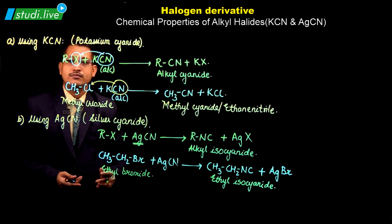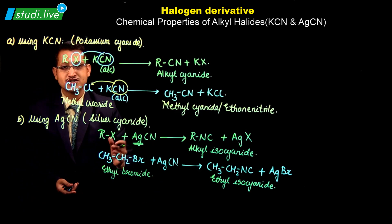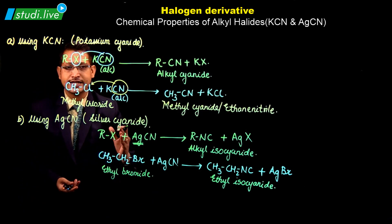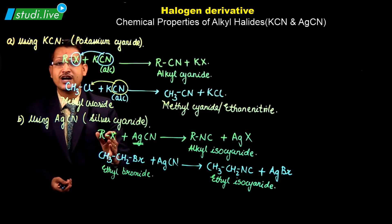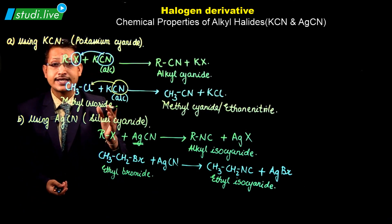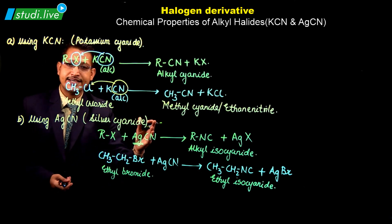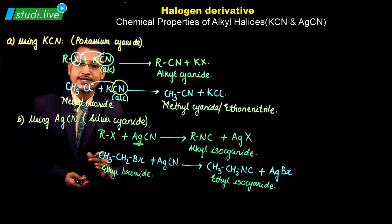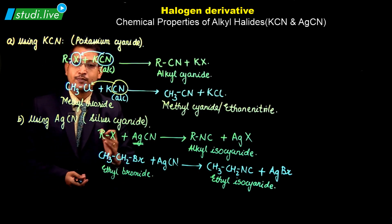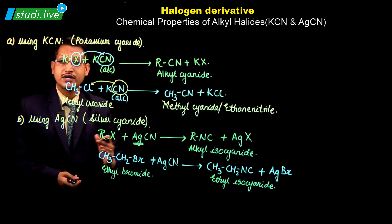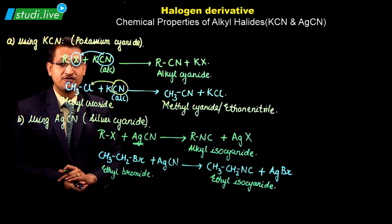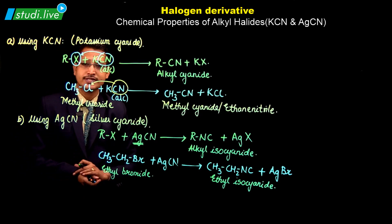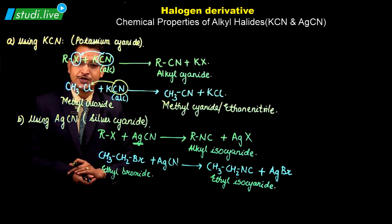In this video we have covered the chemical properties of alkyl halides — specifically the reactions with KCN (potassium cyanide) and AgCN (silver cyanide). In our upcoming videos we will talk about more chemical properties of alkyl halides. Students, stay tuned with Study Live. Thank you.